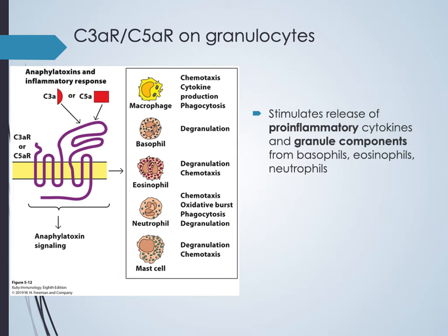C3A and C5A receptors are found on granulocytes — eosinophils, neutrophils, basophils — as well as mast cells and macrophages. These receptors sense C3A or C5A released during complement breakdown, causing cells containing histamine to degranulate and release histamine. They also act as chemotactic signals, drawing cells to the complement activation site, acting as pro-inflammatory mediators releasing cytokines.